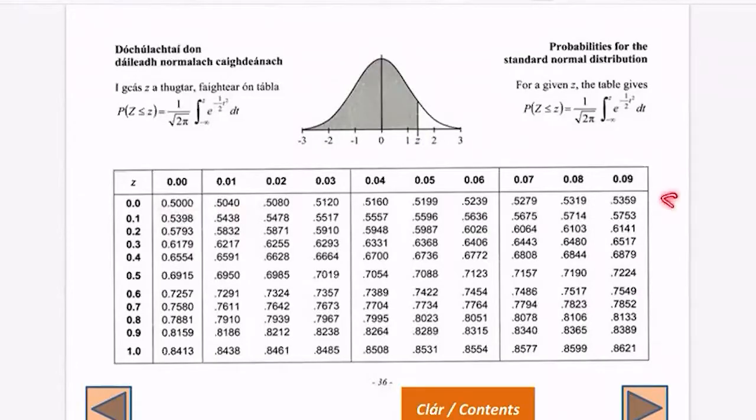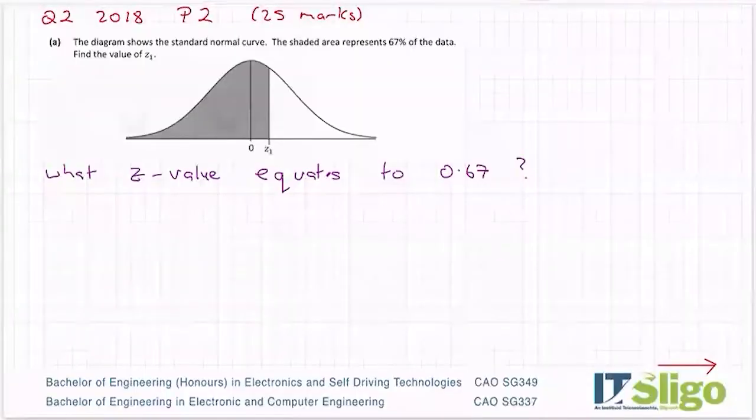So let's find 0.67. You troll through each line and it does go up numerically, 0.65, 0.67. So that is the one that we want. That is 0.4 and then up here for a second place of decimal 4, so 0.44. So Z equals 0.44.